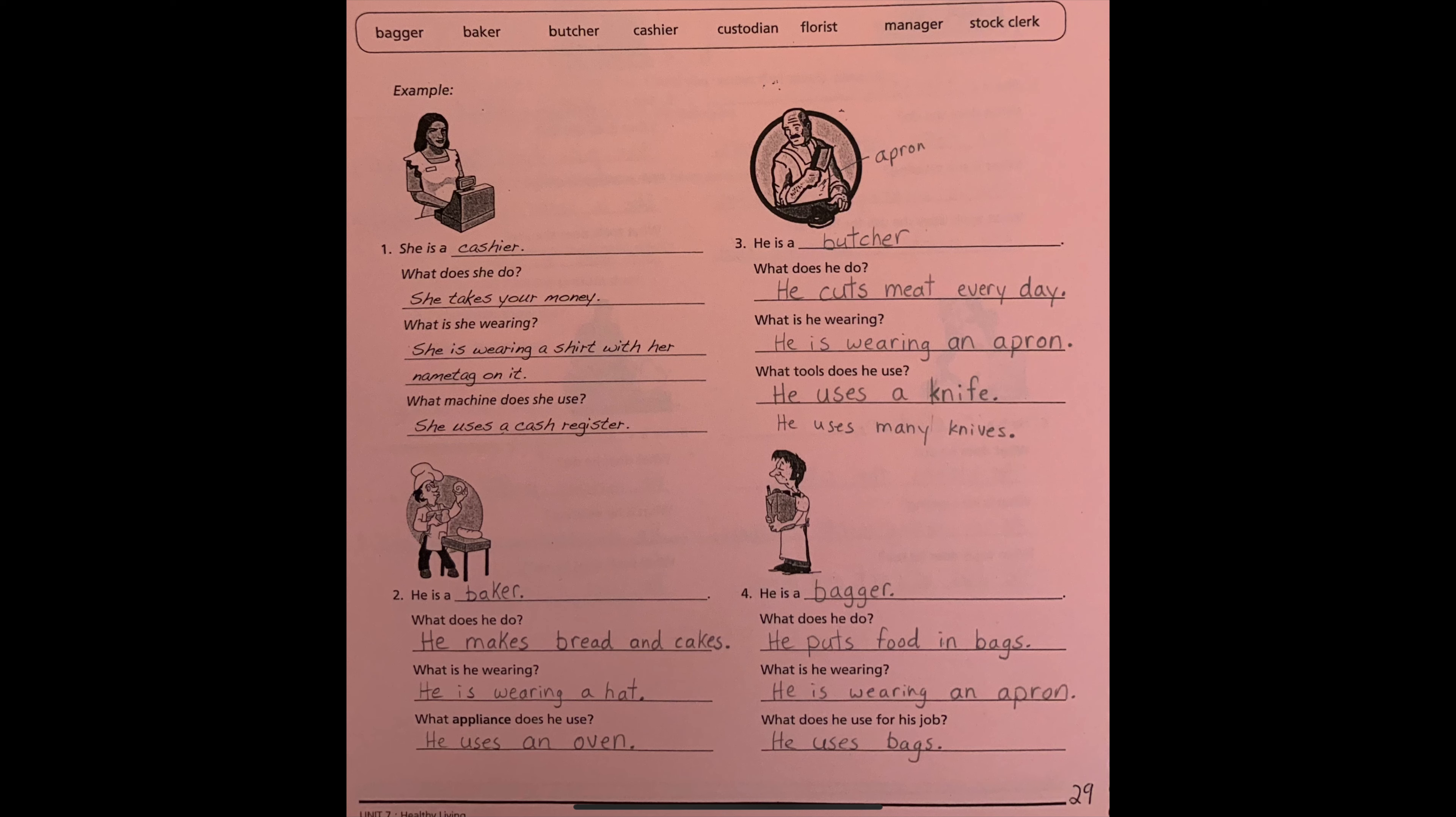Number four. He is a bagger. What does he do? He puts food in bags. What is he wearing? He is wearing an apron. What does he use for his job? He uses bags.